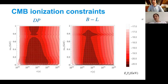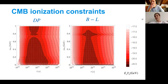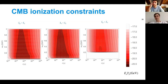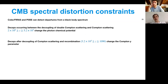The lifetimes covered are very different — constraints become negligible around 10^12 seconds and are strongest around 10^14 seconds. The reason they weaken before 10^13 seconds is that your particles are decaying before recombination and you're not injecting as much energy. Again you see the resonance feature around 0.8 GeV for the dark photon and B minus L cases, which you don't see in the lepton family cases.